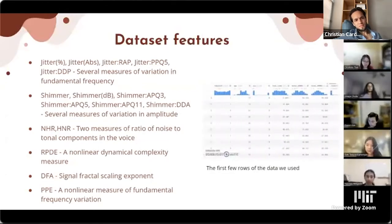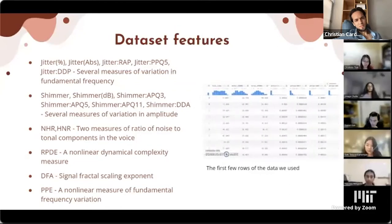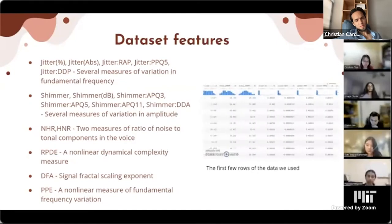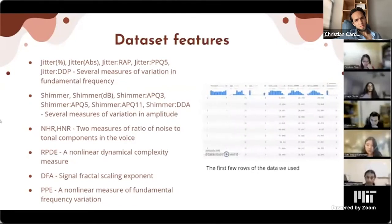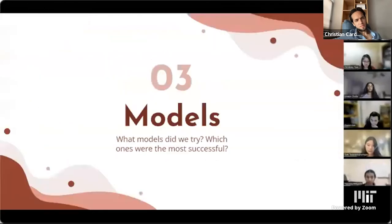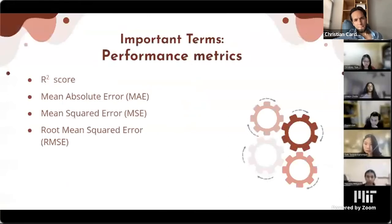One main challenge in developing the app was determining how to extract features from a raw audio file. The training dataset didn't provide audio recordings, but rather extracted features. We had to find out how the features were extracted in order to pass new input into the model. We used the same underlying speech analysis software, Praat, through ParcelMouth — a Python library — allowing us to extract the HNR, all jitter features, and all shimmer features.